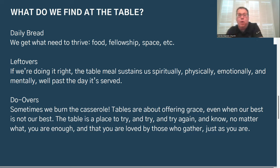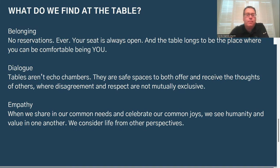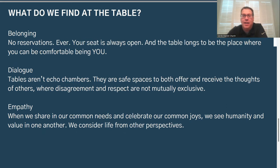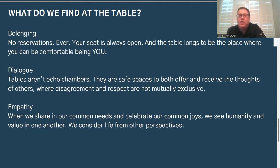So daily bread, leftovers, and do-overs are three things we find at the table. And how about three more? If we're doing table right, we find belonging. We long for spaces in our lives that offer us a chance to simply be who we are. In order to have belonging, spaces must be accessible — there are no reservations, seats should be open. Tables that offer belonging mean this is a place where we can simply be comfortable being who we are.